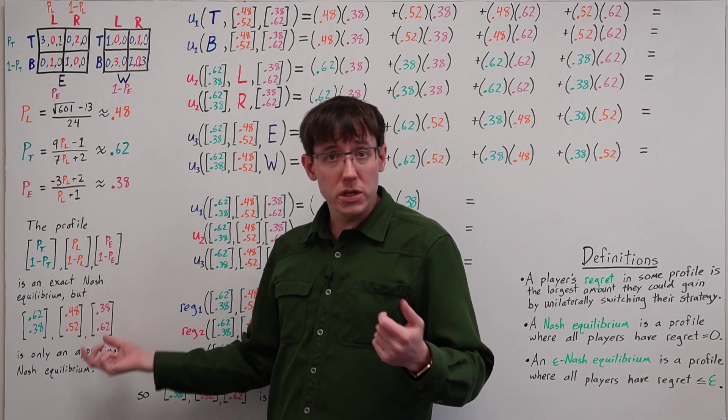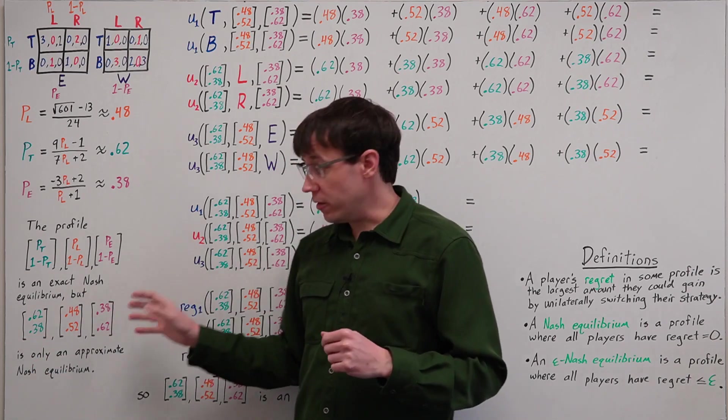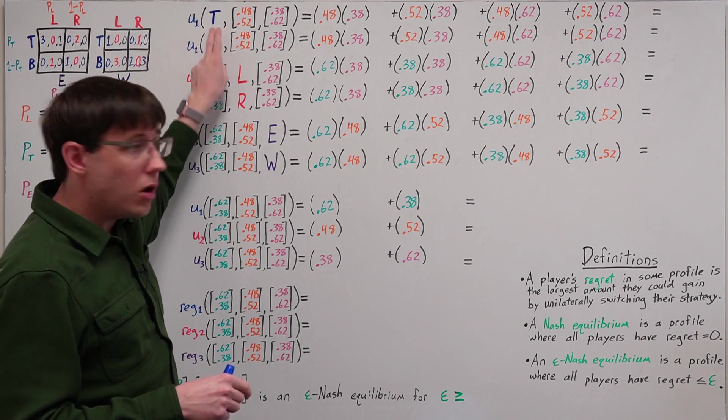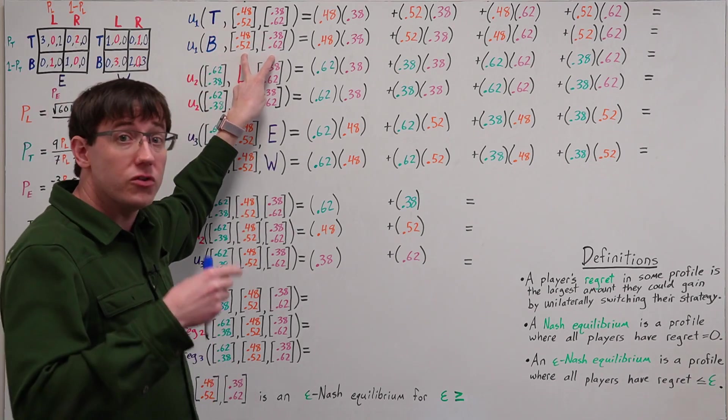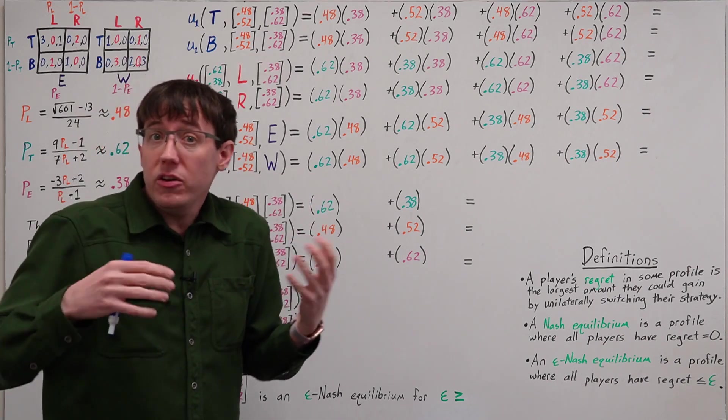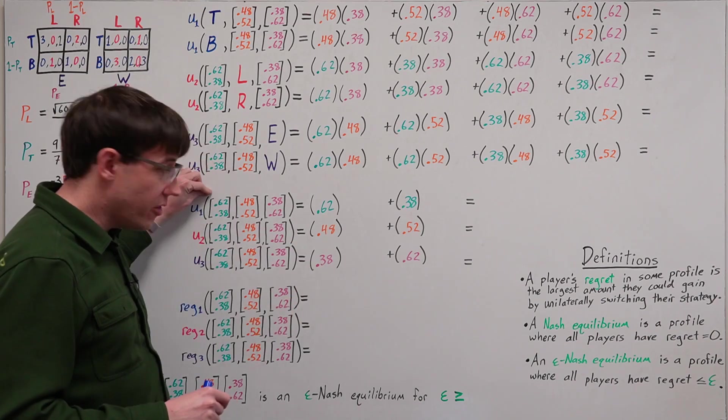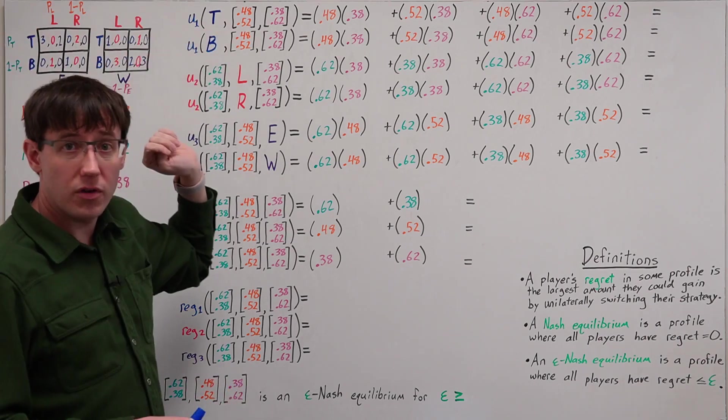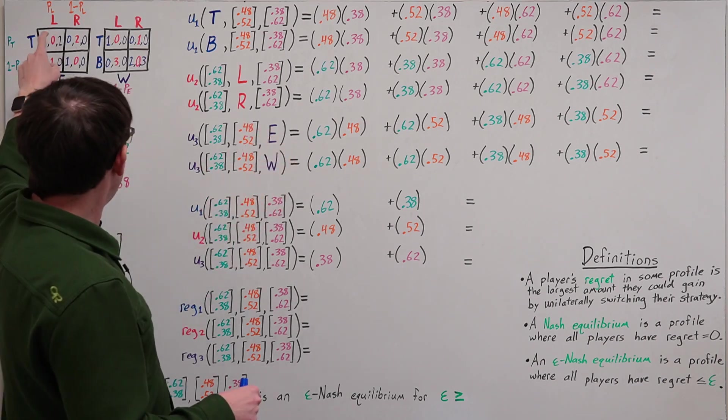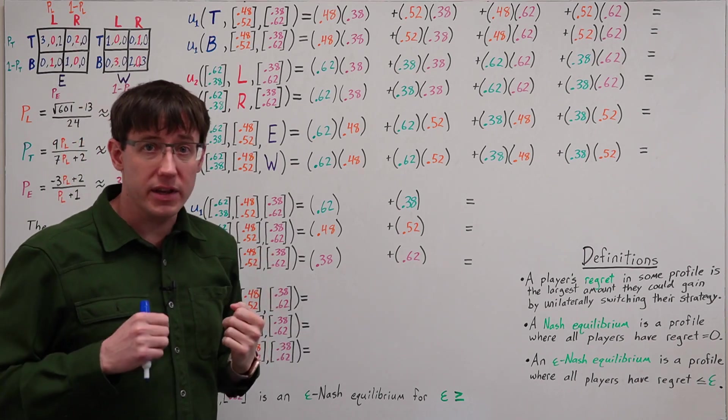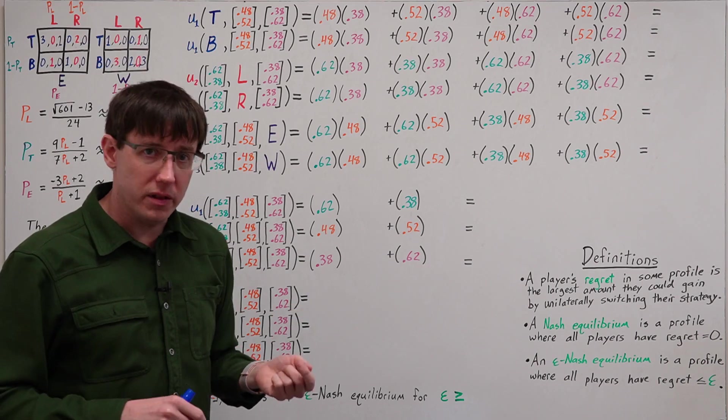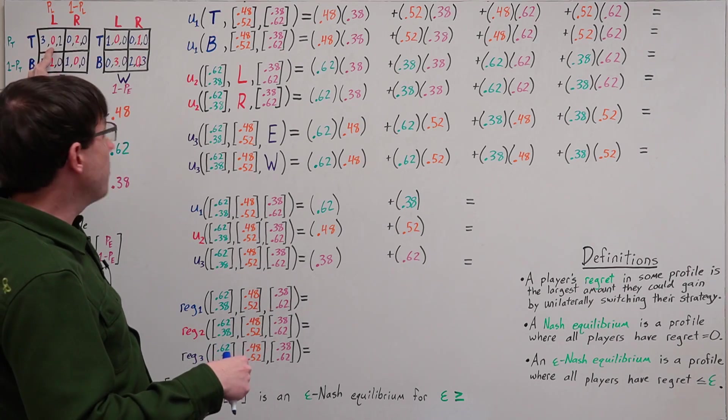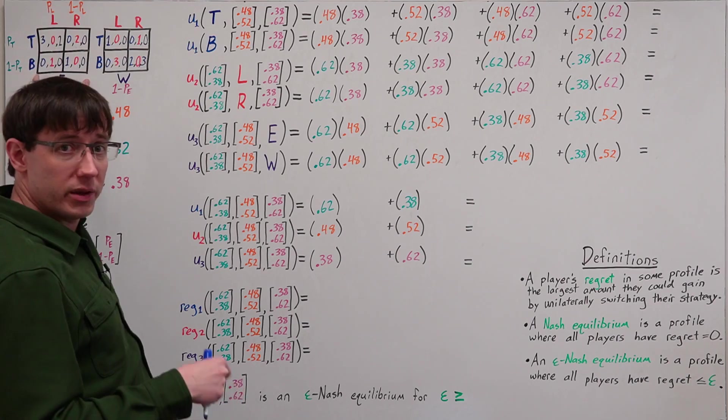So let's try this out by calculating player one's regret for this approximate equilibrium profile. We'll need to find player one's expected utility when they play either T or B, while the other players randomize according to the mixed strategy profile. And we'll compare each of those against player one's expected utility when they also randomize. When player one plays action T, we know we're in the top row of our payoff matrix, and so the possible outcomes are these. And we can get the probability of each outcome by multiplying the respective probabilities of players two and three. For example, the TLE outcome will happen with the probability that player two plays L times the probability that player three uses E.